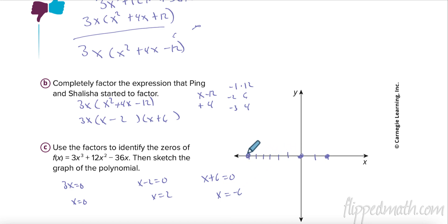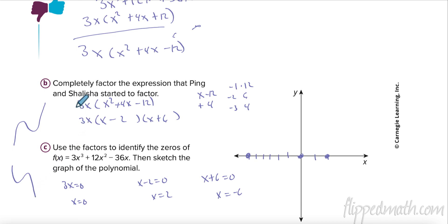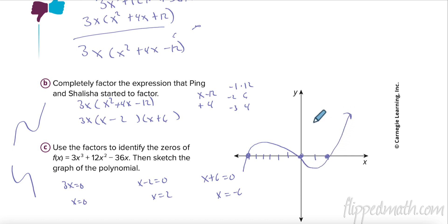To sketch it: it's a cubic because there's a third degree, so it's either an S-curve going up or down. My leading coefficient a is positive, so it starts low and goes high. I draw the curve passing through the zeros at -6, 0, and 2.